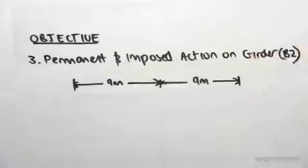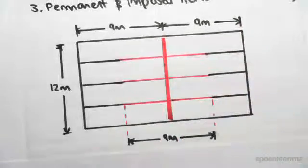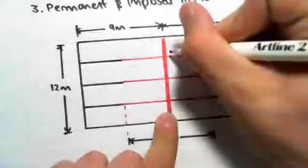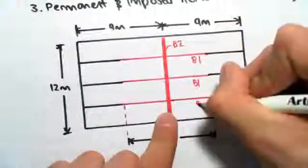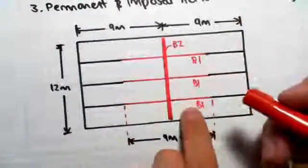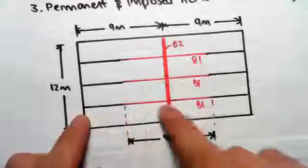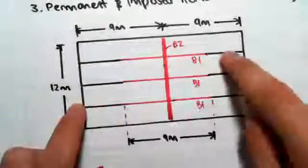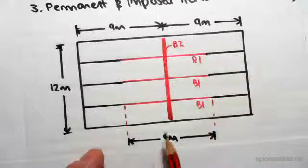I'm going to draw a little diagram to get your head around what's going on. What I've drawn here is just the girder B2 — this central girder — and all these beams here are the B1 joists. I just want you to understand what's actually happening.